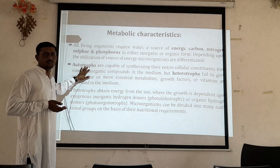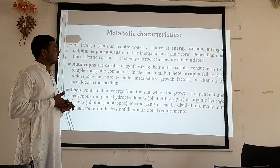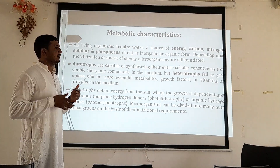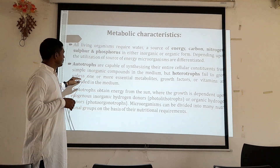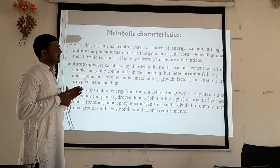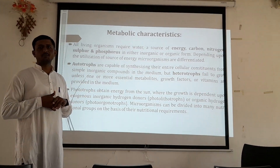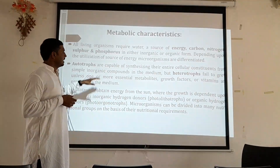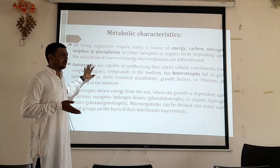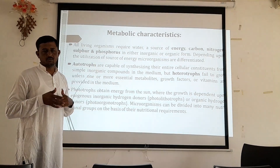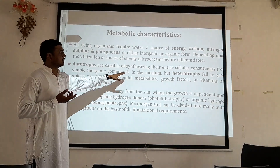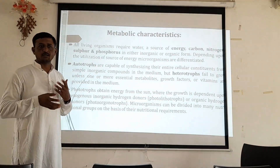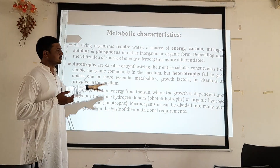Autotrophs are capable of synthesizing their entire cellular constituents from simple inorganic compounds in the medium. Auxotrophs, on the other hand, fail to grow unless one or more essential metabolites, growth factors, or vitamins are provided in the medium. Autotrophic organisms carry out their whole photosynthetic mechanism and produce their own food material. Auxotrophs are grouped separately as they are unable to produce their own food material and require specific nutritional constituents for growth.